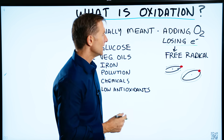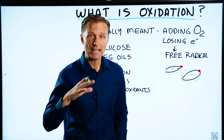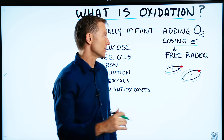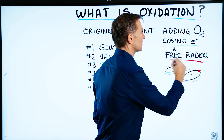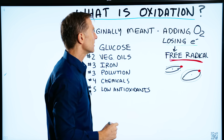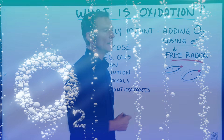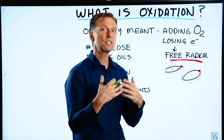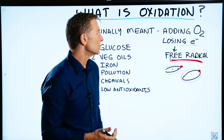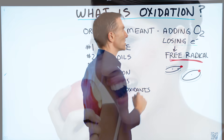In the body, that unpaired electron is going to start damaging tissue, DNA, et cetera. That's the problem with free radicals — it can come from adding an oxygen to some other compound. The definition has also expanded to the creation of free radicals without the oxygen.